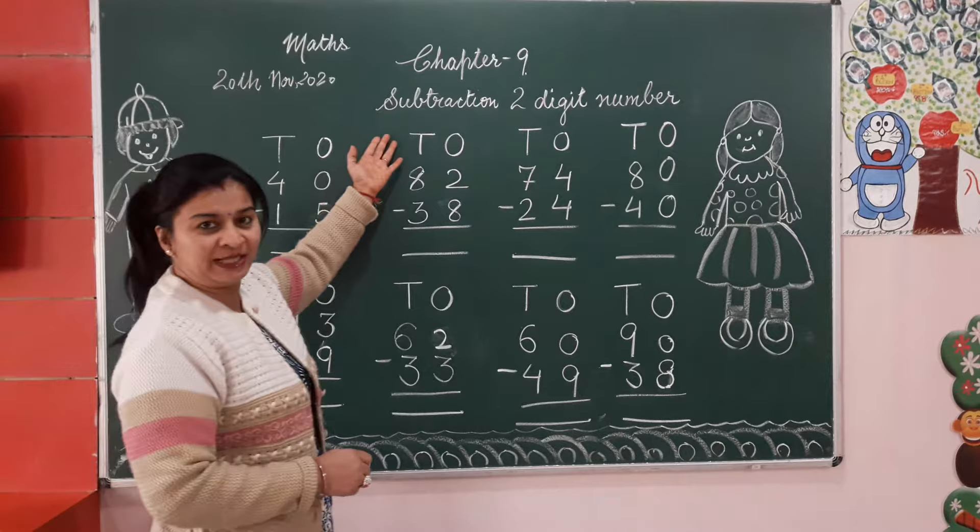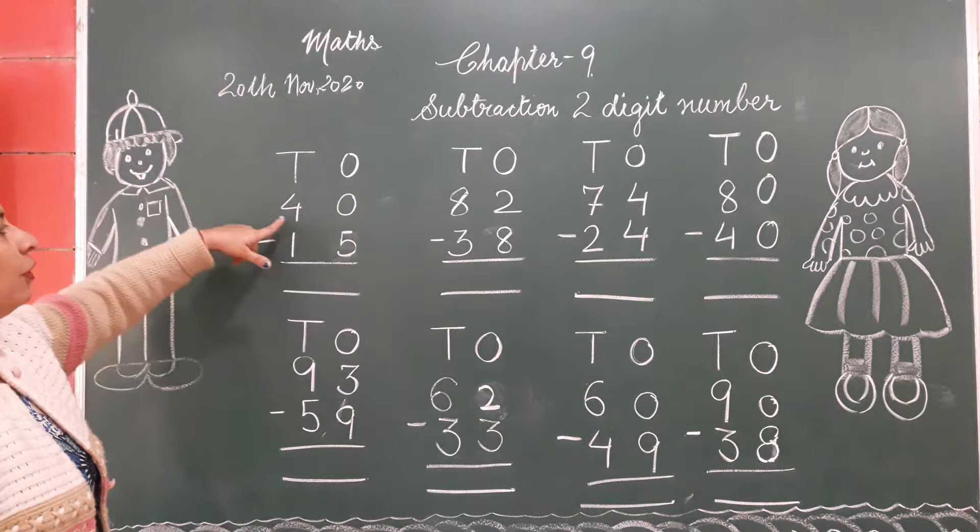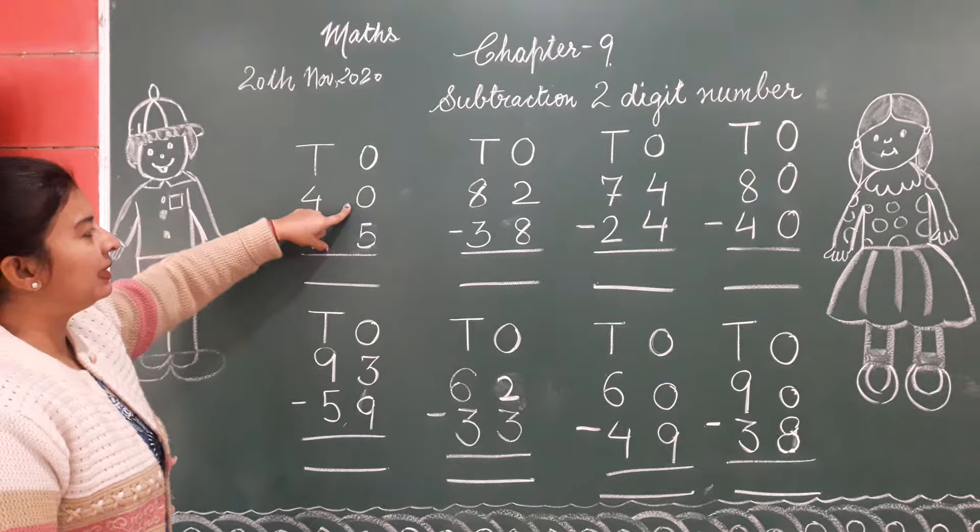Today again we will do subtraction sums. Here first sum is 4040 minus 1515. We have to subtract 15 from 40. Now let's start from ones side.